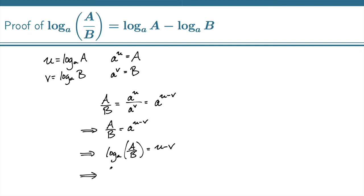u and v, however, we can now write as the logarithms that they are. So I have log base a of capital A over capital B equals log base a of capital A minus log base a of capital B. And that is the proof of this logarithm law.